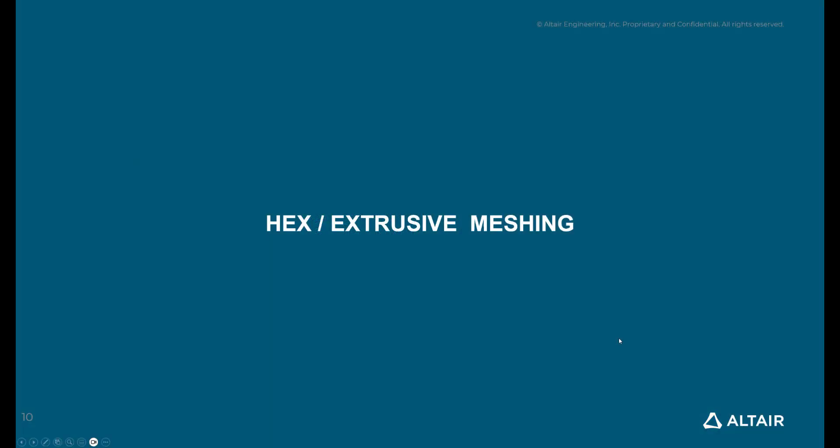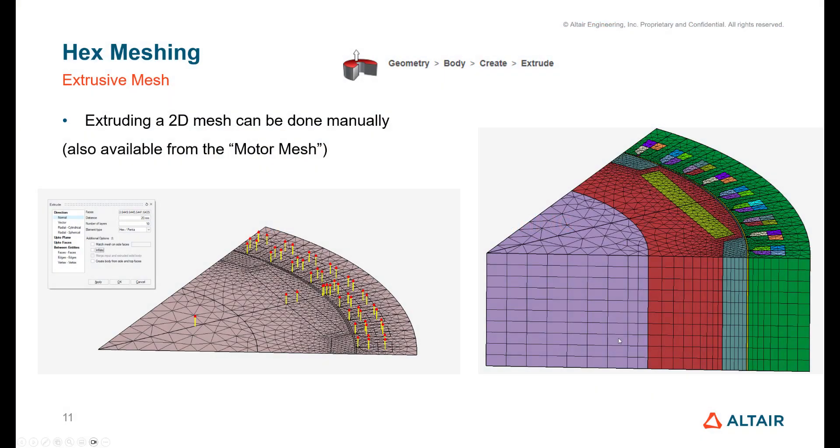Now let's have a look at some of the extrusive meshing methods we have. First of all, any kind of 2D mesh you can extrude it, you can produce the 3D body out of it. Using just the extrude method you can select any kind of 2D mesh. Let's say I have a mesh from the motor mesh here, I select all the faces and I can extrude it, and straight away gives me a very nice 3D mesh.